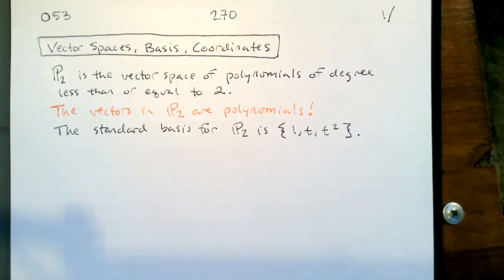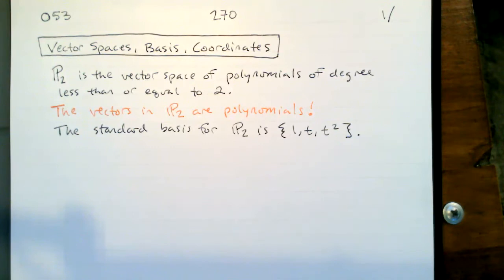Today we want to continue on our journey of using coordinates to make everything look like Rn. This is why we start studying vector spaces in Rn and then we just make everything look like Rn. We said Rn is so cool, let's just use that for everything.